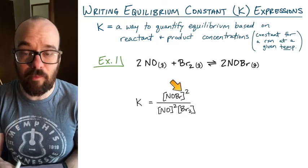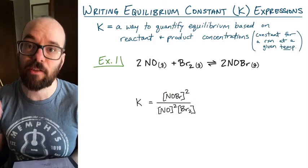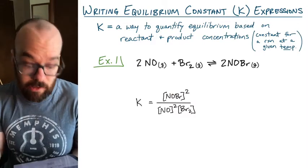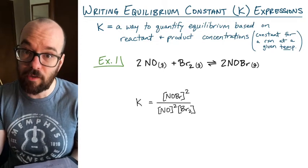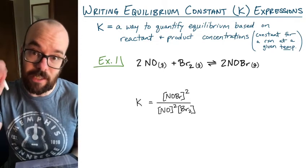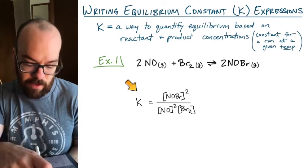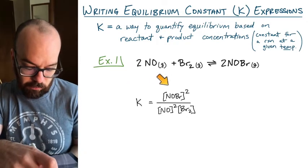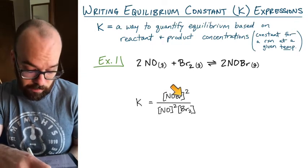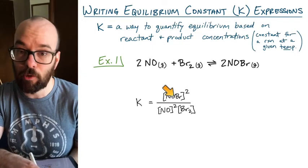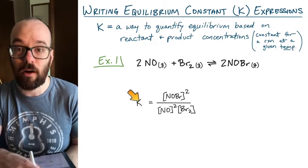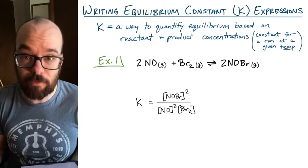Notice the brackets — they indicate that these are concentrations. We're looking at the molarity of each reactant and product at equilibrium, and that's what we would substitute in to calculate our K-value. For example, if the concentration of NOBr at equilibrium was 0.1 molar, we'd substitute 0.1 molar in here, and the molarity of the other two, and calculate our K-value.